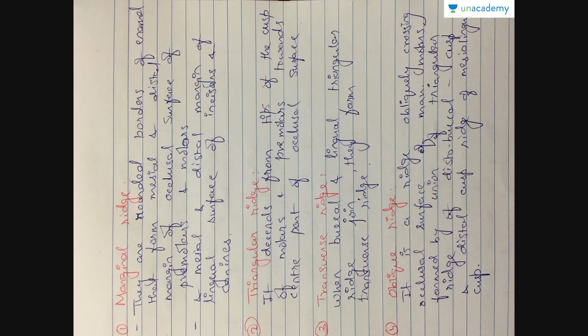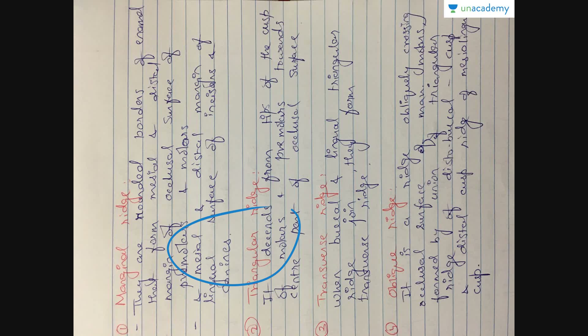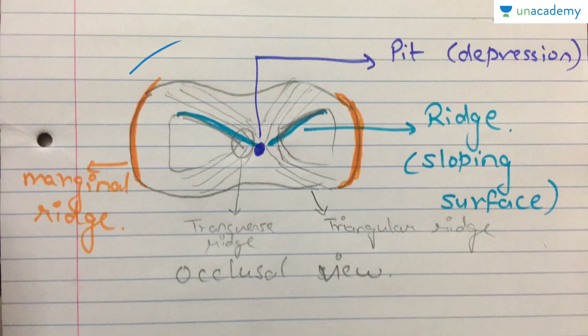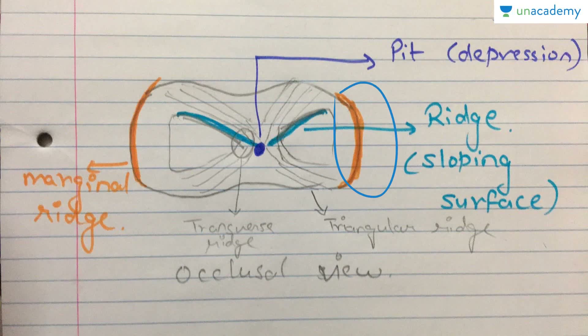Starting with the ridges, there are basically four main types: the marginal ridge, triangular ridge, transverse ridge, and the oblique ridge. The marginal ridge is the rounded borders of enamel on the mesial or distal sides. Looking at the diagrammatic view, the marginal ridges are present on the mesial or distal side of the occlusal surface of the posterior teeth.